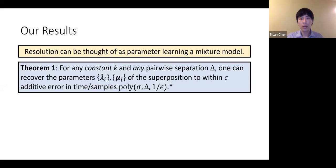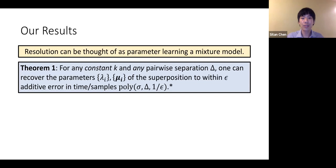Our first result: for any constant number of Airy disks and any pairwise separation Δ, no matter how small relative to the prescribed diffraction limits, you can recover the parameters of the superposition in time and sample complexity that scales polynomially in everything. The catch is that we have a fairly bad dependence on k — specifically, we require exponential k-squared dependence, where k is the number of Airy disks.